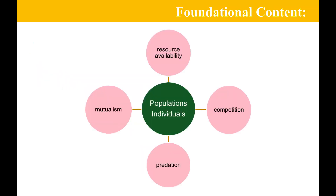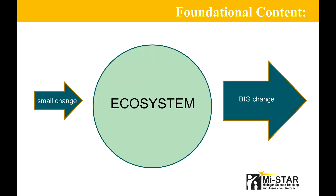This unit is built around the concept of ecological interactions, or how organisms interact with other organisms and the environment. Teachers should understand the interactions of resource availability, competition, predation, and mutualism, and how they affect both individuals and populations. You should also be aware of how seemingly small changes to the biotic or abiotic parts of the ecosystem may alter these interactions. These changes can ripple through the entire ecosystem, changing it in dramatic ways. If you're not confident about your knowledge on these topics, review the teacher background content resources, which are linked in the unit overview as well as in the lesson plans.